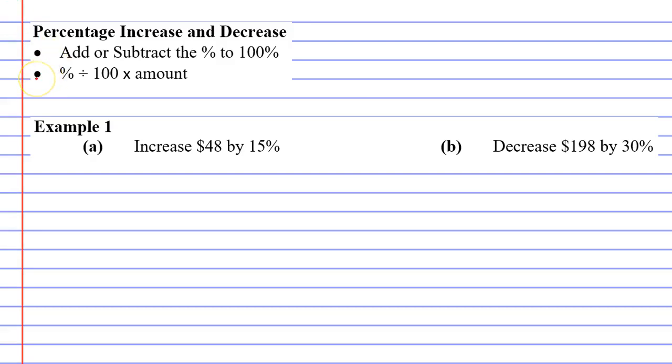You might notice the second dot point is one we've looked at before, percentage divided by 100 times amount. Now what I'm going to do is I'll look at question A and I'll show you how to do it using the old method.